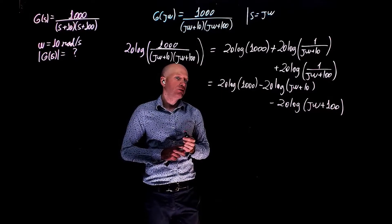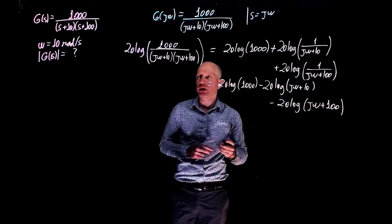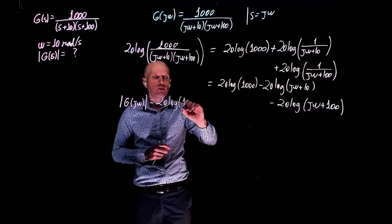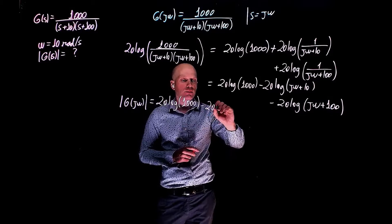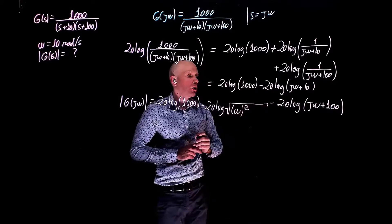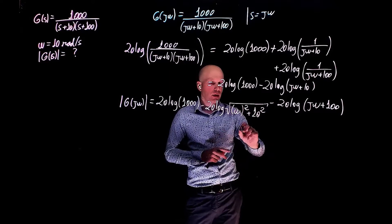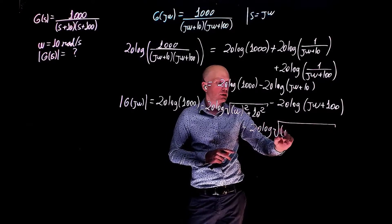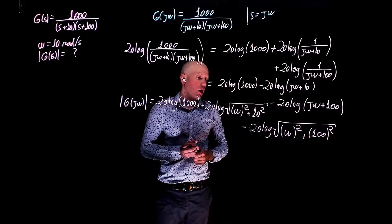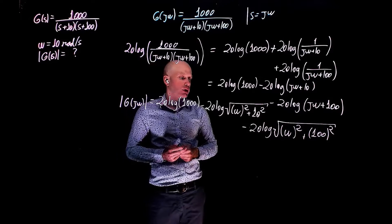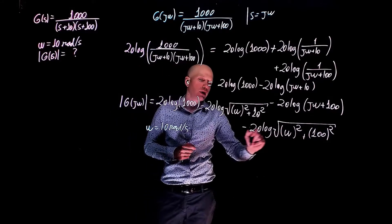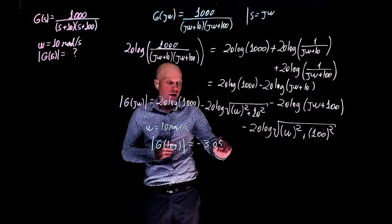Now we take the magnitude of this function. The magnitude is the square root of the real part squared plus the imaginary part squared. So the magnitude is 20 log of 1000 minus 20 log of sqrt(omega² + 10²) minus 20 log of sqrt(omega² + 100²). Replacing omega with 10 gives the magnitude as negative 3.05 decibels.